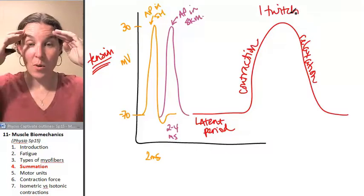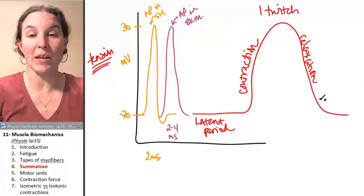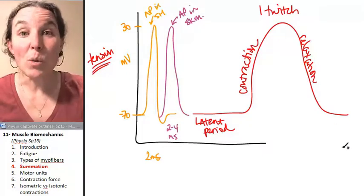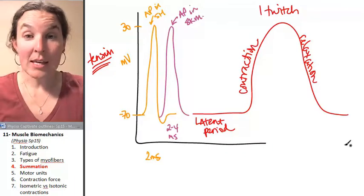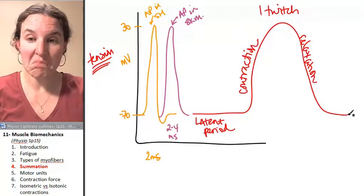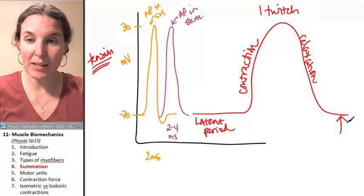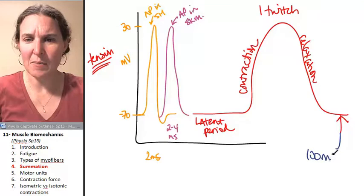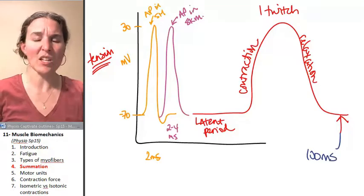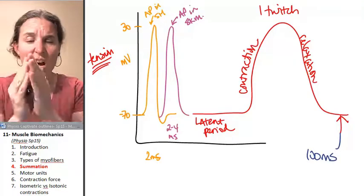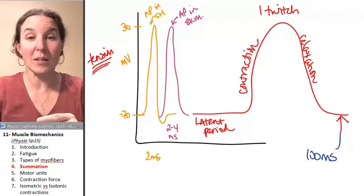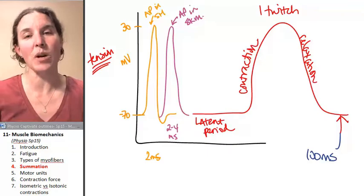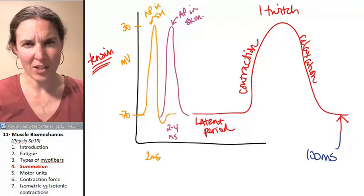That right there is one twitch. Now here's the thing that I want to tell you that is going to make you go, oh well, that's an interesting phenomenon. If you allow the muscle to fully relax and get back to this point, it takes, oh, let's just say 100 milliseconds. So from start to finish, 100 milliseconds later, we will have one complete twitch done, and we're back to our relaxed muscle where we started. Can you imagine that?